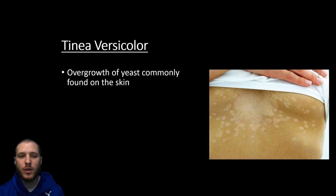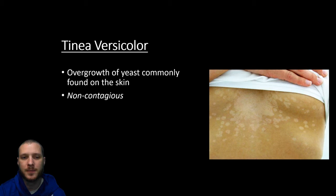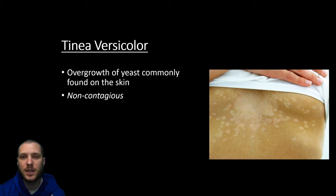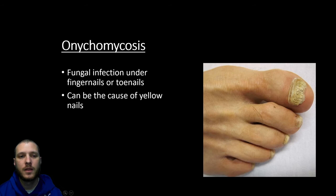Tinea versicolor is an overgrowth of a common yeast found on the skin. We always have colonies of bacteria and yeast on our skin that serve an important function. With tinea versicolor, there's an overgrowth of that common yeast for some reason. Importantly, it's non-contagious — if a doctor confirmed someone has it, you can massage that person with no risk to yourself. Signs include patches of skin discoloration — lighter or darker — typically on the back, chest, or upper arm.